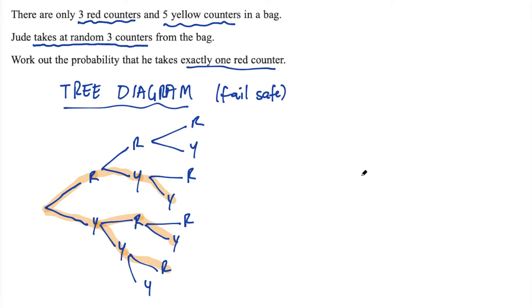Then you need to think about the probabilities for each branch. And this is a step where you really need to pay attention. So on the first branch for red, we've got three red counters out of how many? What's the total? It's eight, because we've got three red and five yellow. So the probability of picking a red on the first pick is three out of eight. And for yellow, it's five out of eight.